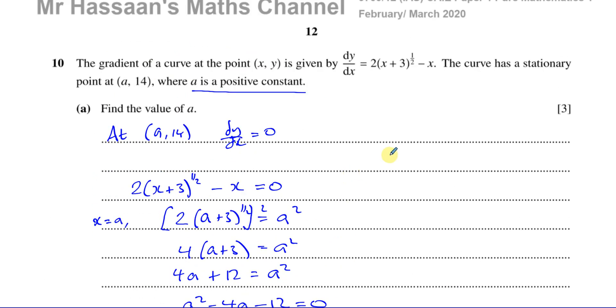The key to this is to understand that at the stationary point the gradient is equal to zero. So when x equals a, dy/dx equals zero.